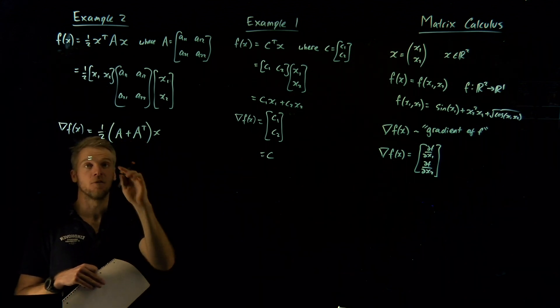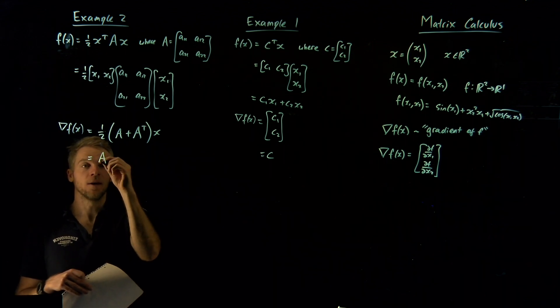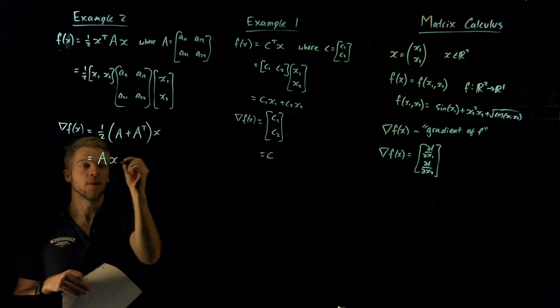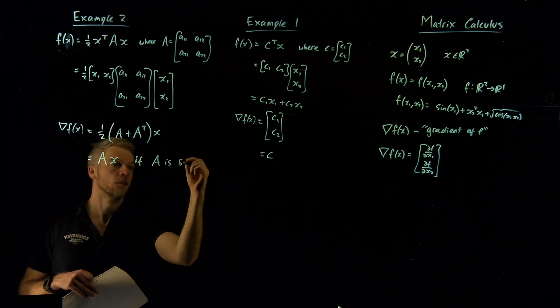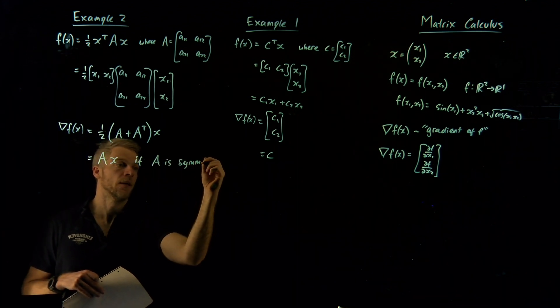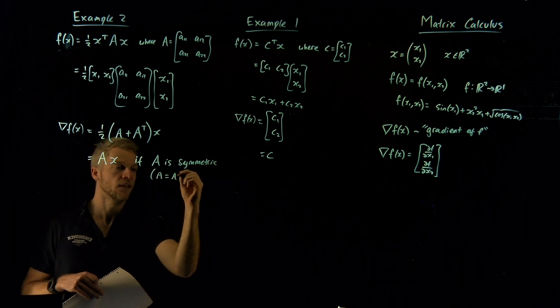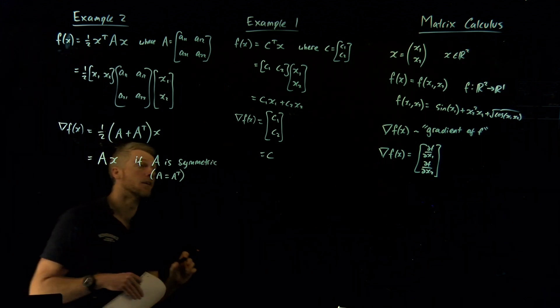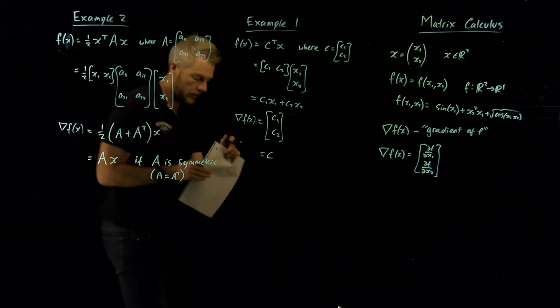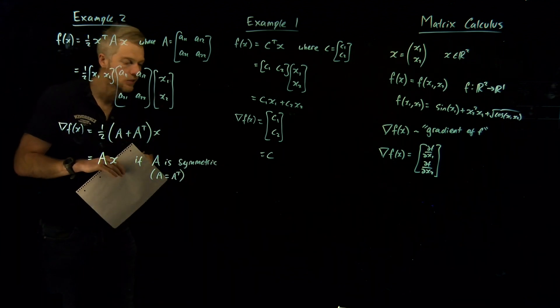Now what's interesting is that in the case that A is symmetric, then this will be A plus A, which would be 2A, and that'll cancel off with a half. And so we'll be left with this whole thing will be equal to A times by x if A is symmetric. And what do I mean by symmetric? We've covered it before. That means A is equal to its transpose. So this is a very useful identity here. And so let me summarize everything all together that we've covered in this nice little quick video.